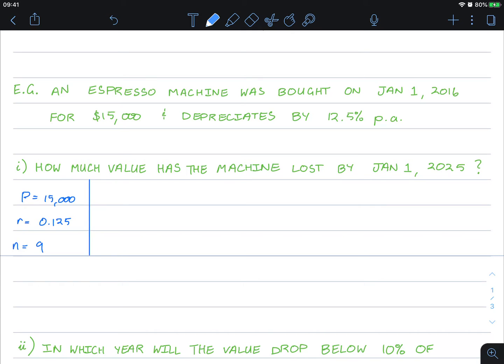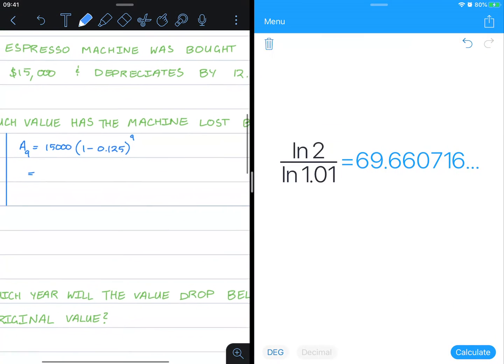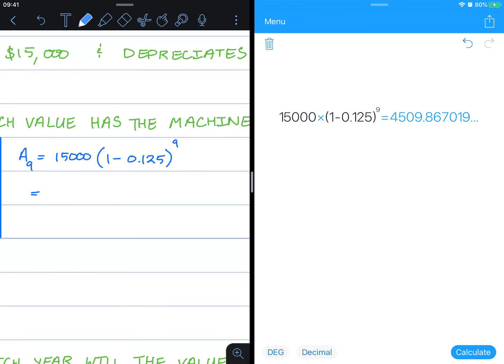So calculating this, A after 9 years is going to be 15,000(1 - 0.125) to the power of 9. So the machine after 9 years is worth $4,509.87 to the nearest cent.